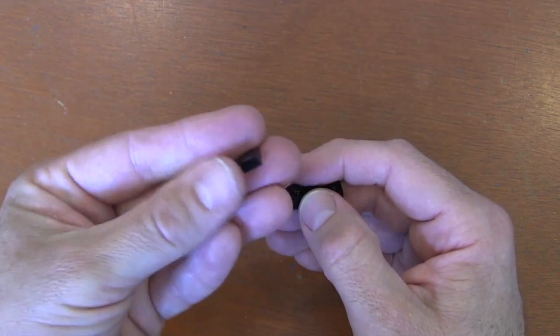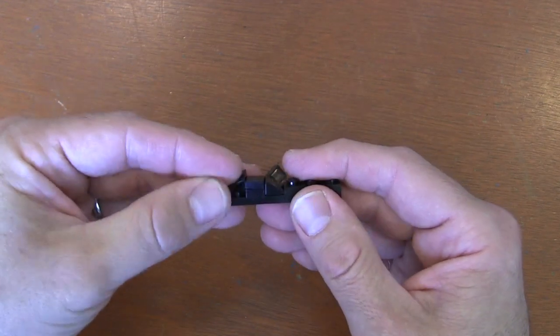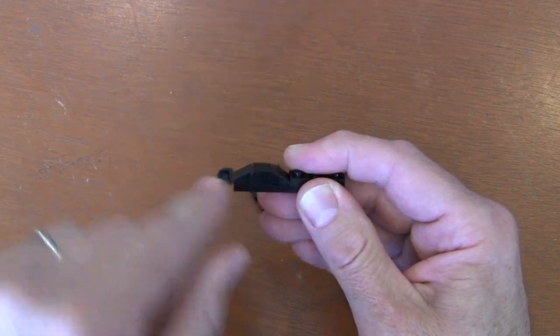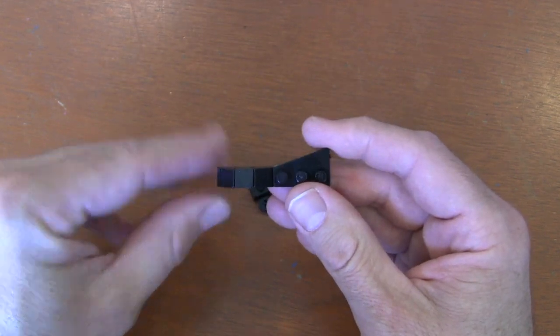And now I'm going to get one more cheese wedge slope. Put the fat end of the cheese wedge slope near those plates and have it slope down to the front. And then we've got the side of our Batmobile.